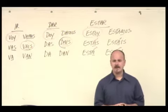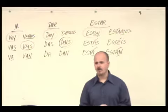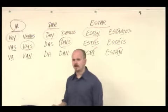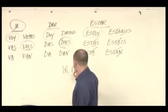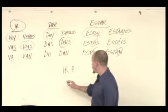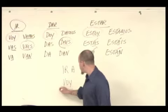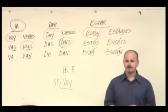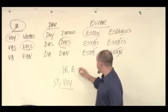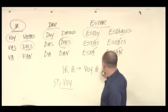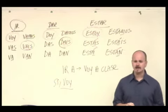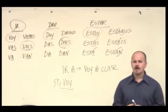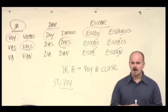So, that's basically it for ir, dar, and estar. One thing before I go on. The verb ir is very, very, very often going to be followed by a. Not always. I can say, for instance, if you ask me if I'm going to class, I can say sí, voy, yes, I am going. And that would be totally okay to say. However, oftentimes, we'll see ir a, as in, for instance, voy a clase. I am going to class. So, just notice, because ir is talking about going places, we're often going to places, and so ir is very often going to be followed by a.